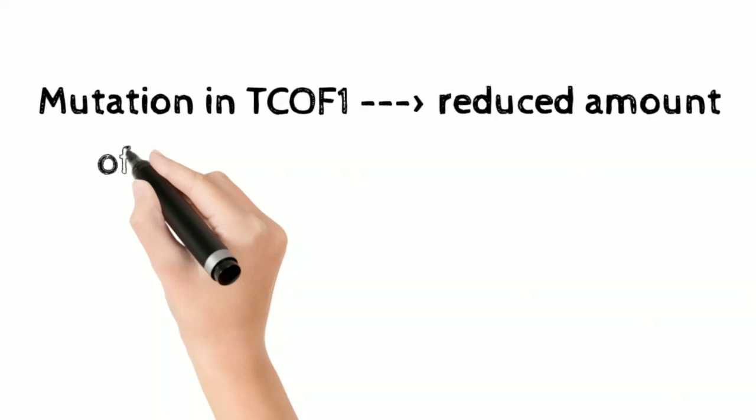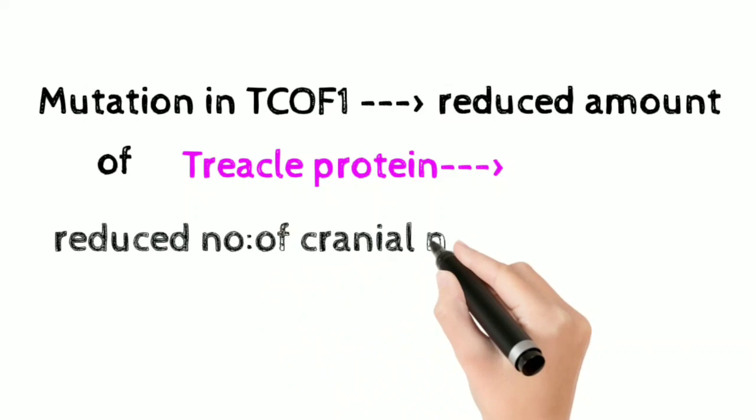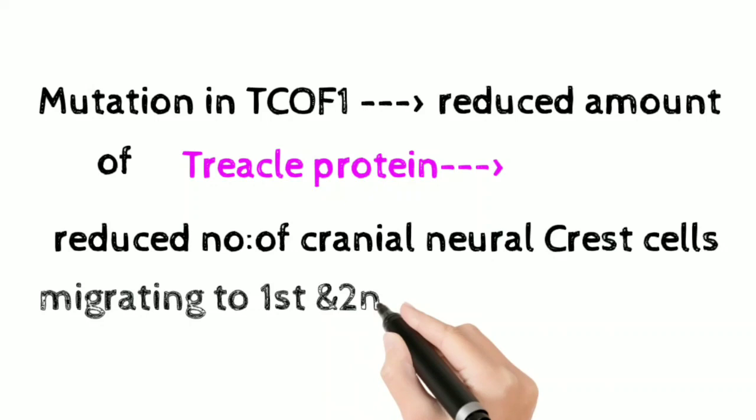The mutation of TCOF1 results in a reduced amount of treacle protein, which in turn results in a reduced number of cranial neural crest cells migrating to the first and second pharyngeal arches. So the first and second pharyngeal arch structures are mostly affected, which is the reason for abnormal facial features.